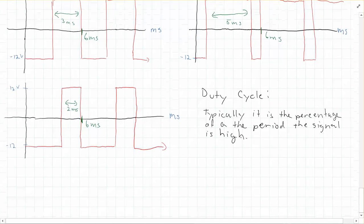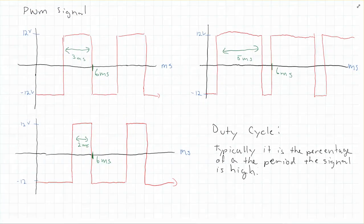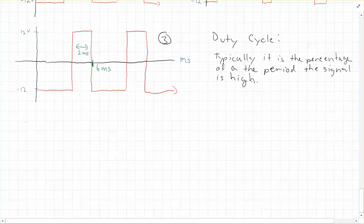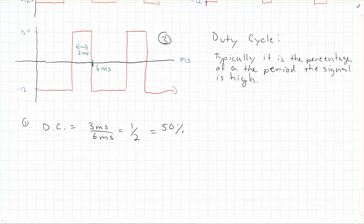Before we get into applications, let's talk about duty cycle. There's also a negative duty cycle — the percent of time it's low. For figure one, the square wave: it's high for 3 milliseconds, the period is 6 milliseconds, so the duty cycle is one-half, which is 50%. A 50% duty cycle PWM is just a special case — it's what we call the square wave.